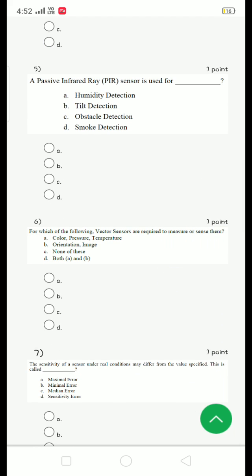Fifth question: the PIR sensor is used for. The answer is option C, obstacle detection.